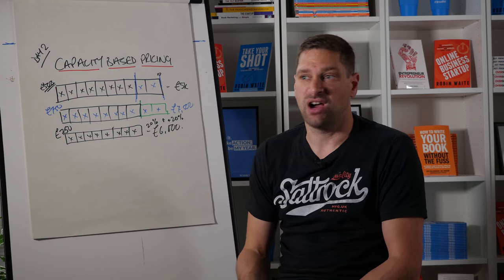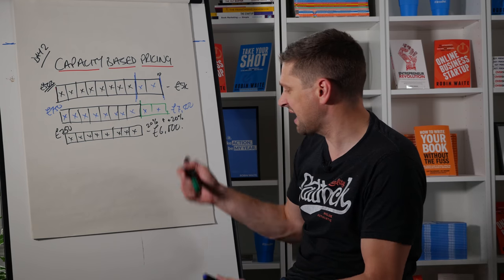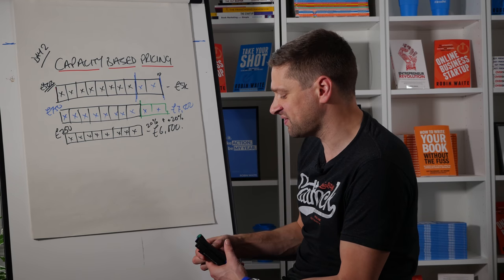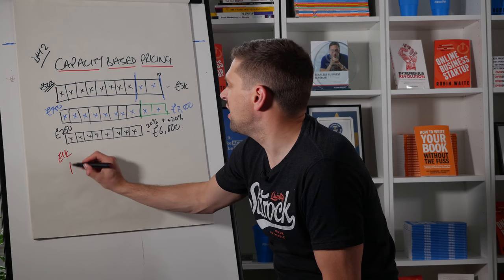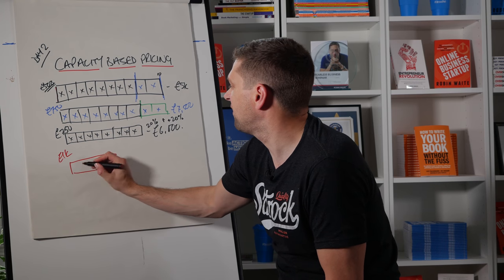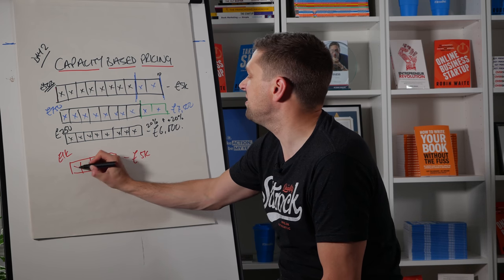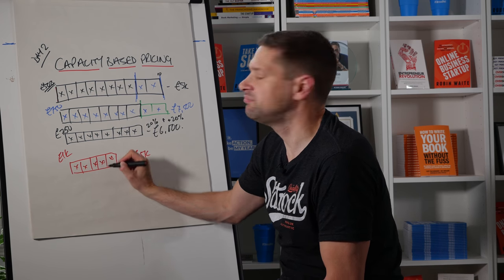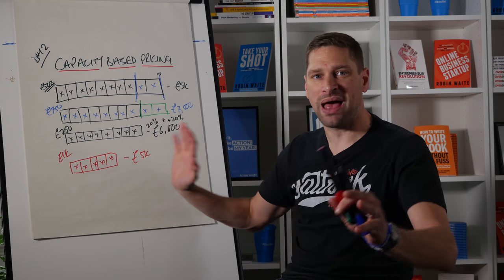If we wanted to just work two thirds of the time or two fifths of the time, instead of all working hours, could be that you could charge £1,000 per client and reduce your capacity right down to, say, five units. So we're still only making £5,000, but we're working half the hours. And there will be a balance in your business.